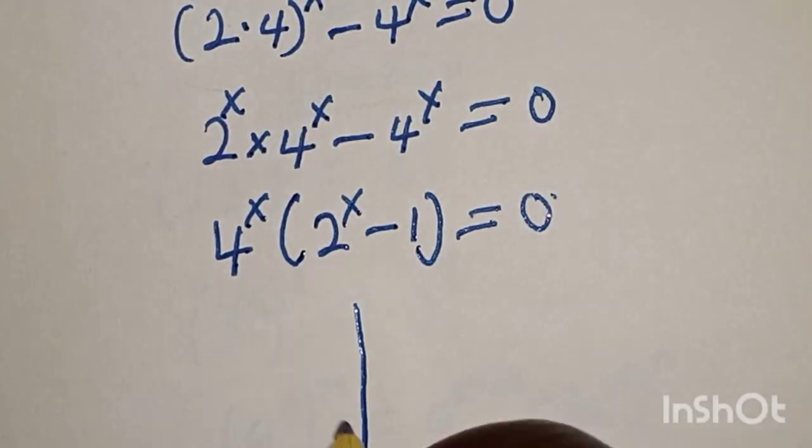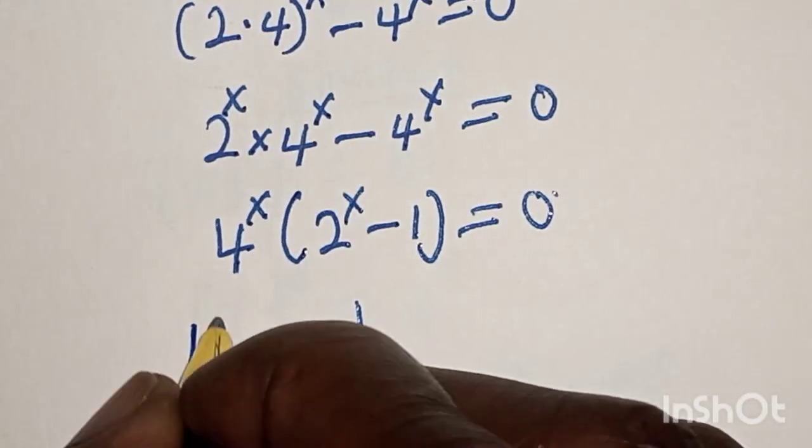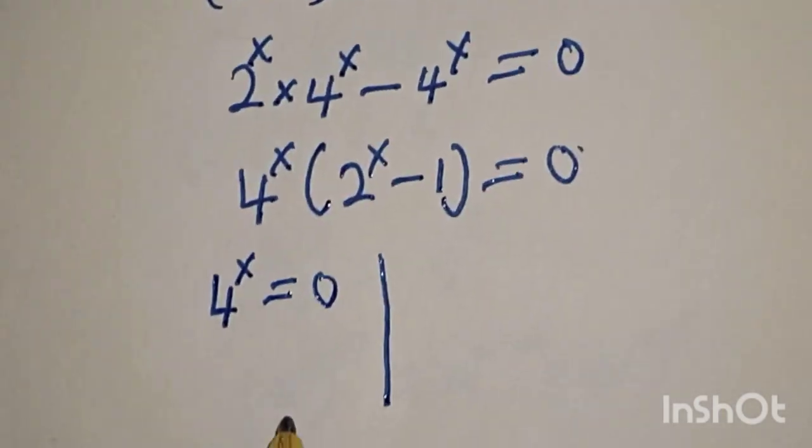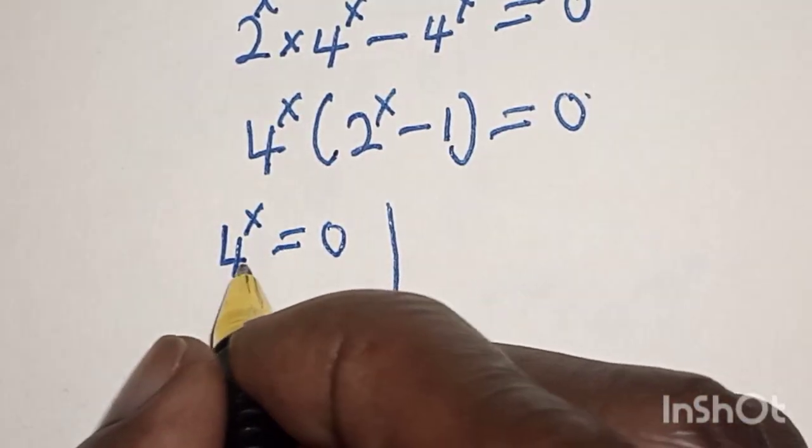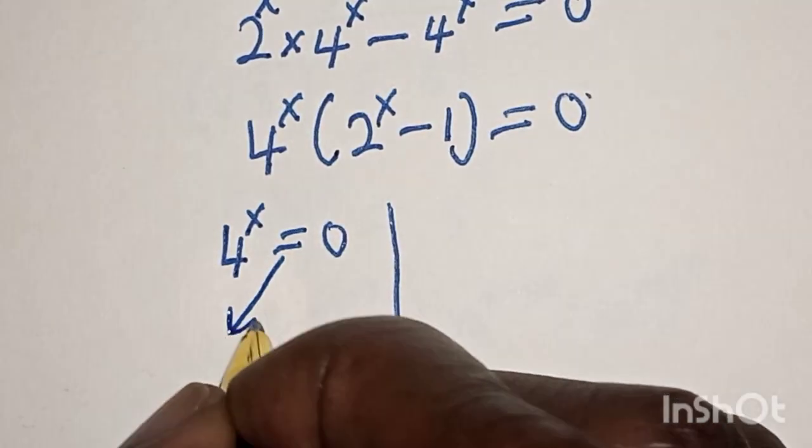So there are two cases here. 4 raised to power x is equal to 0, and we know that 4 raised to power x cannot be equal to 0. This is undefined.